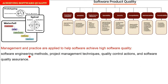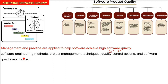So what do we apply? Software engineering methods, project management techniques — scheduling, PERT, CPM — quality control actions, quality assurance. All these are applied to every work product and to the whole software development life cycle.